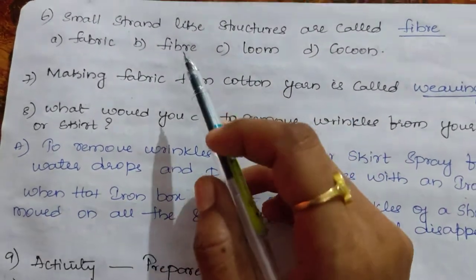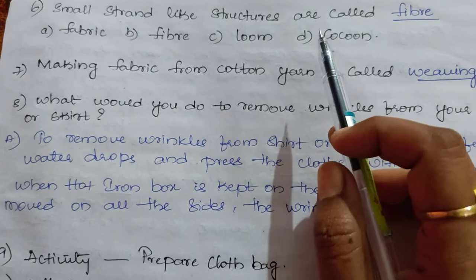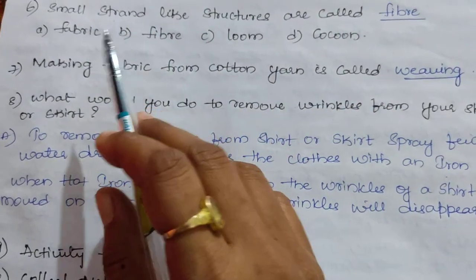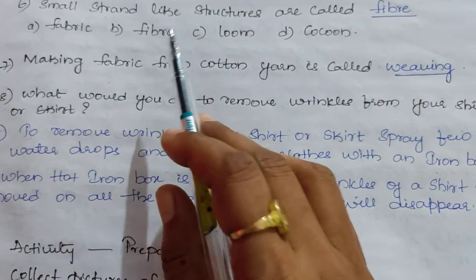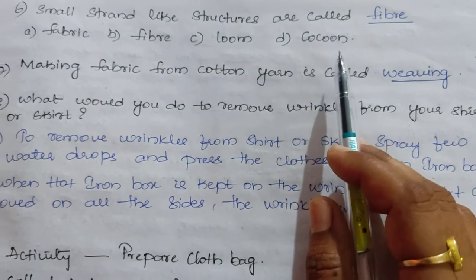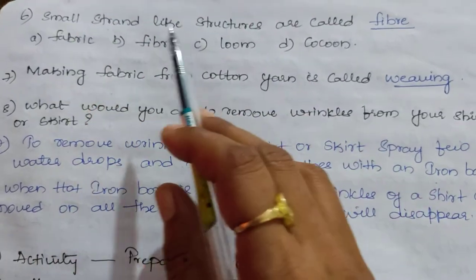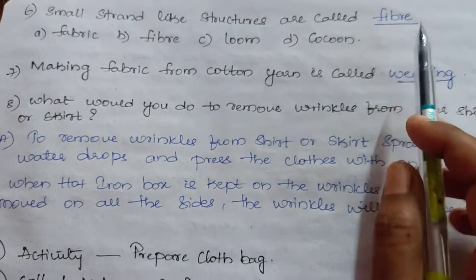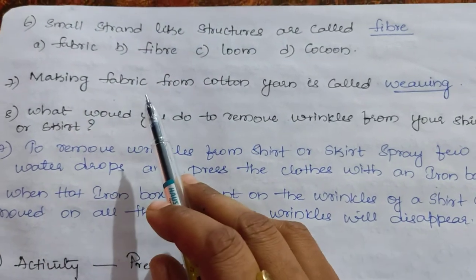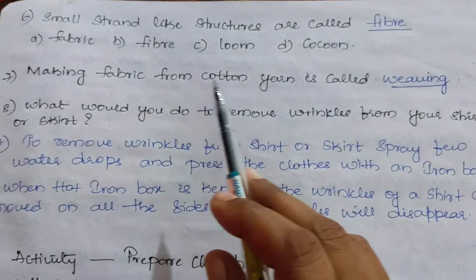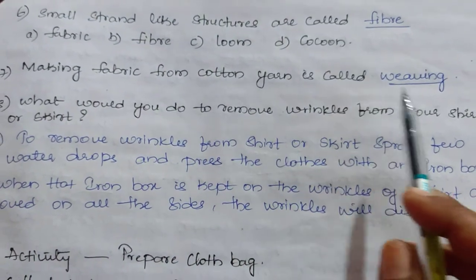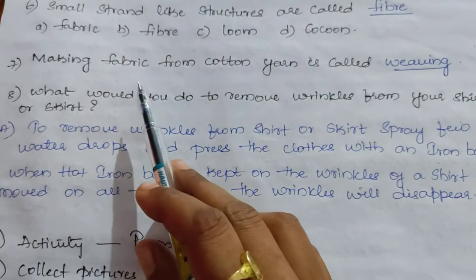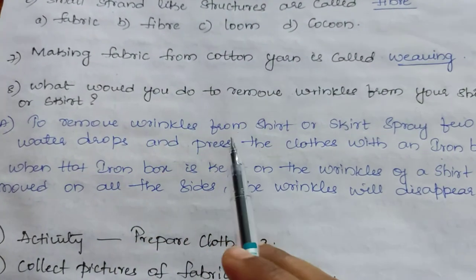Question 6: small strand-like structures are called — fiber. The answer is fiber. Question 7: making fabric from cotton yarn is called weaving. By the process of weaving, we get fabric from cotton yarn.